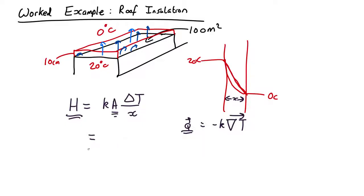so K for roof insulation is about the same as conductivity of air, which is about 0.025 watts per meter per Kelvin.